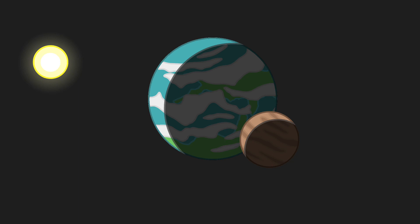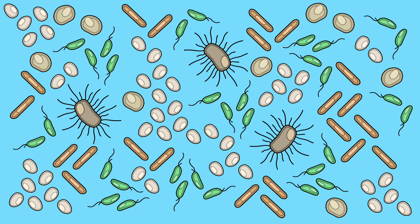Now we will cover the beginnings of life. Life will likely emerge in the deep sea around hydrothermal vents and will be simple prokaryotic bacteria. After about 2 billion years, eukaryotic cells emerge from a merger of two bacterial cells, and a second merger will occur with a photosynthetic bacteria about 300 million years after.